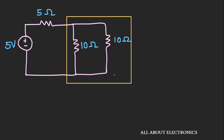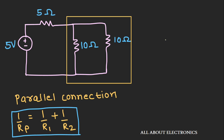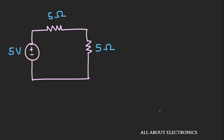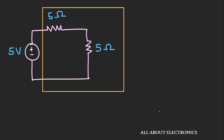We can replace these two 10-ohm resistors by their equivalent parallel resistance — let's call it Rp. Using the parallel formula: 1/Rp = 1/10 + 1/10, which means 1/Rp = 2/10, so Rp = 5 ohms. Now the circuit has two 5-ohm resistors connected in series. Their equivalent series resistance Rs' is the summation of these two resistors, which is 10 ohms.